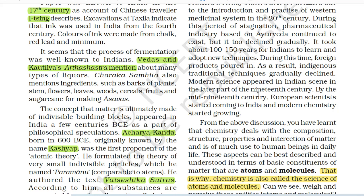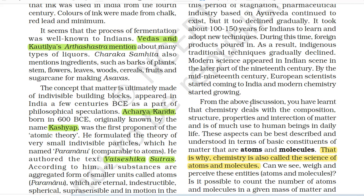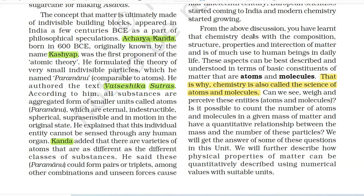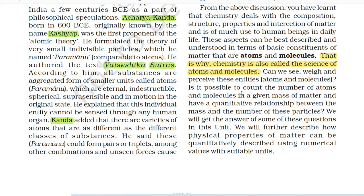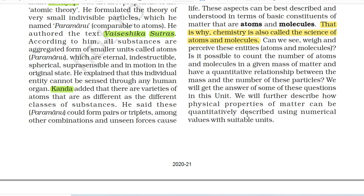Modern science appeared in the Indian scene in the later part of the 19th century. By the mid 19th century, European scientists started coming to India and modern chemistry started growing. From the above discussion, you have learnt that chemistry deals with the composition, structure, properties and interaction of matter and is of much use to human beings in daily life. This aspect can be best described and understood in terms of basic constituents of matter — atoms and molecules. That is why chemistry is also called the science of atoms and molecules.